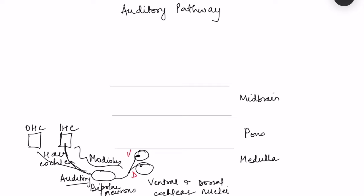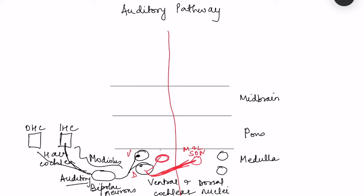Most fibers from the cochlear nuclei synapse on the superior olivary nuclei — both medial and lateral — with most fibers crossing to the contralateral superior olivary nuclei. Some fibers also go to the ipsilateral superior olivary nuclei. Additionally, some fibers go directly to the nucleus of the lateral lemniscus, where they form the lateral lemniscus bundle.